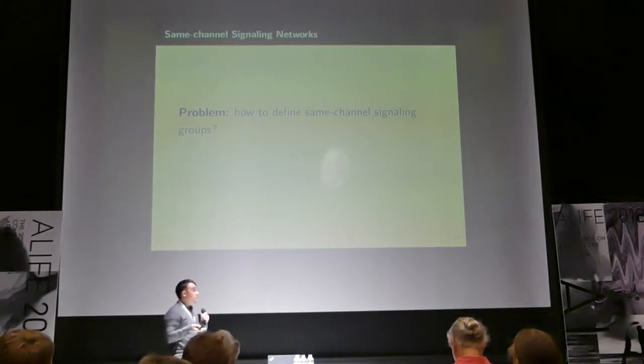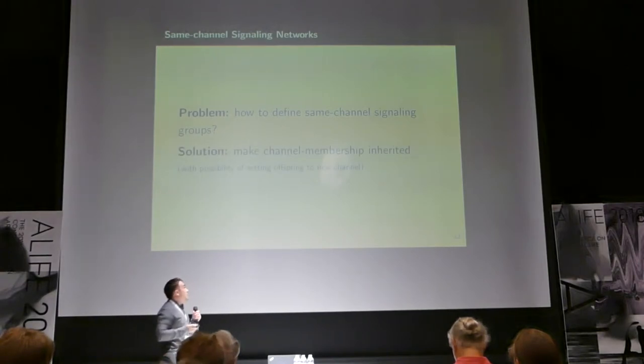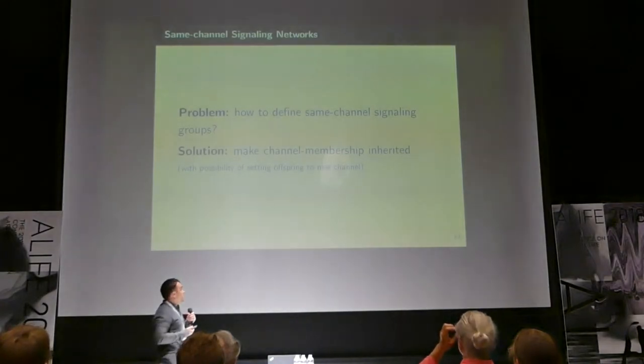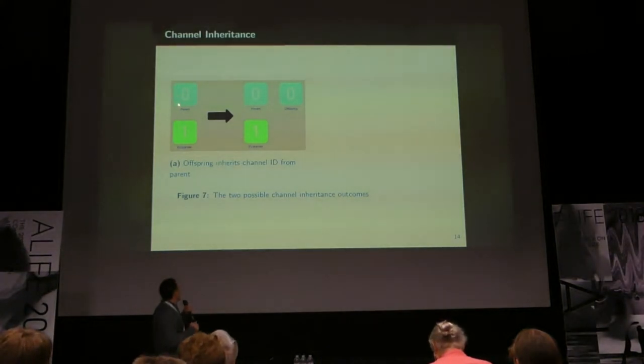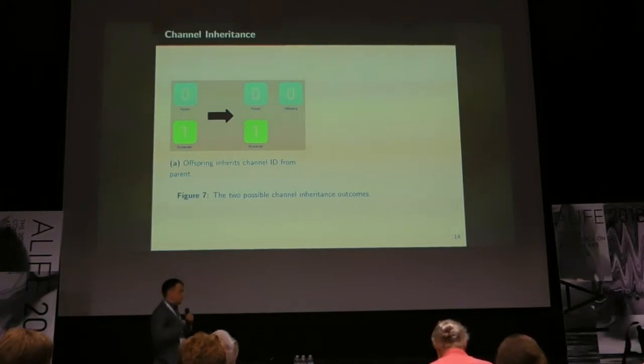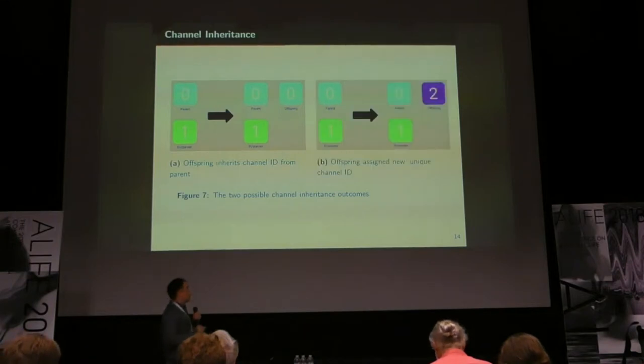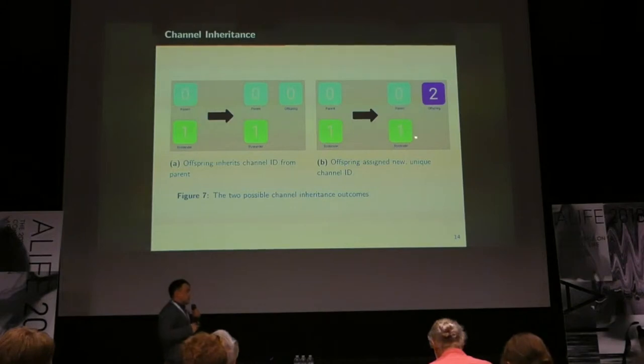This brings us to the problem, how should we define these same channel signaling networks? And what we do here is we make this channel membership inherited. During a reproduction event, a parent producing an offspring, the parent can produce an offspring that shares the channel, and so it'll communicate with the offspring in order to absorb resources. Or, the parent can put the offspring on a completely new channel that is distinct from other channels that might exist in the region.